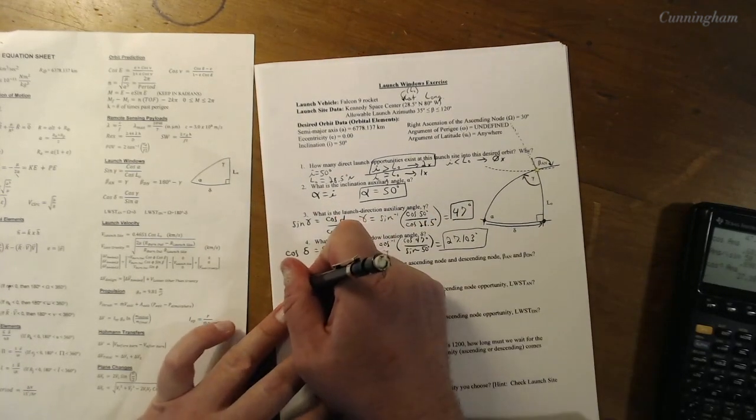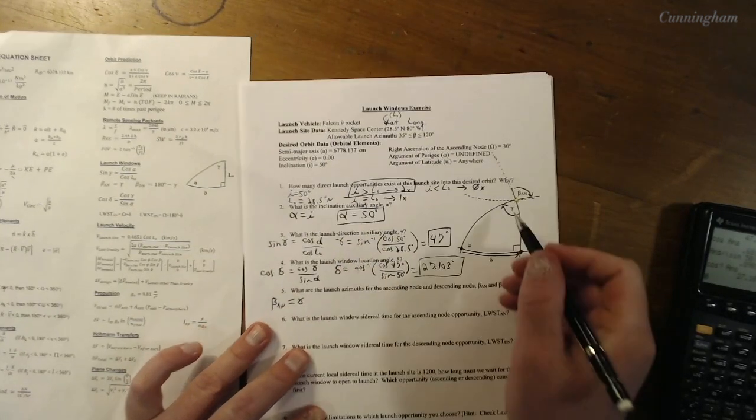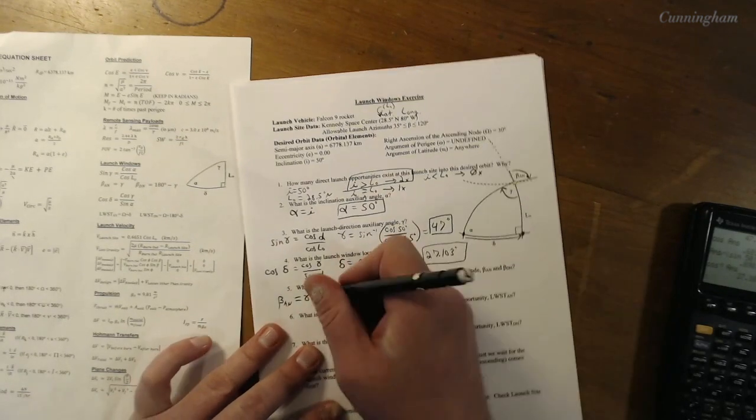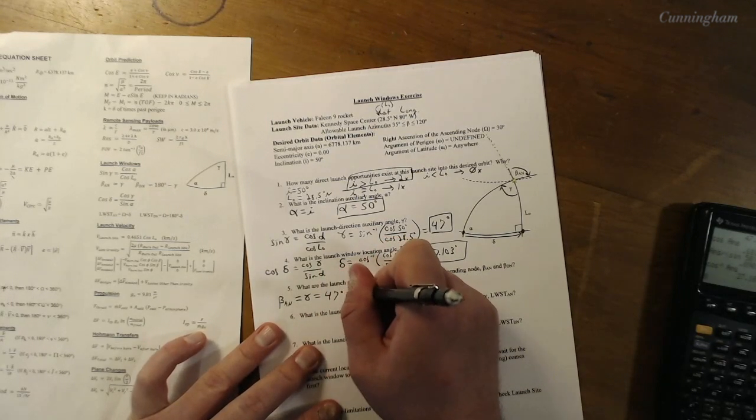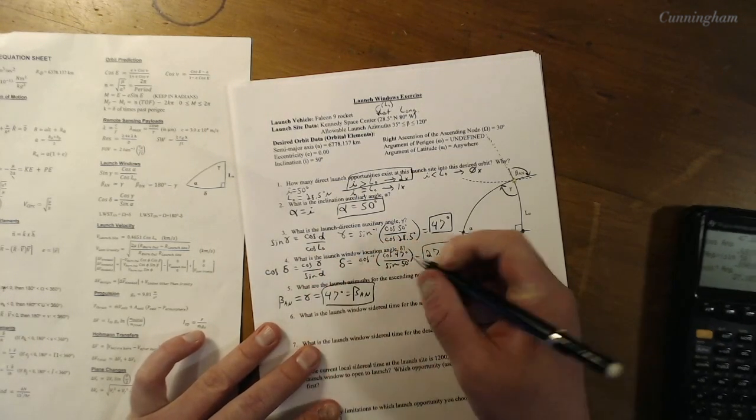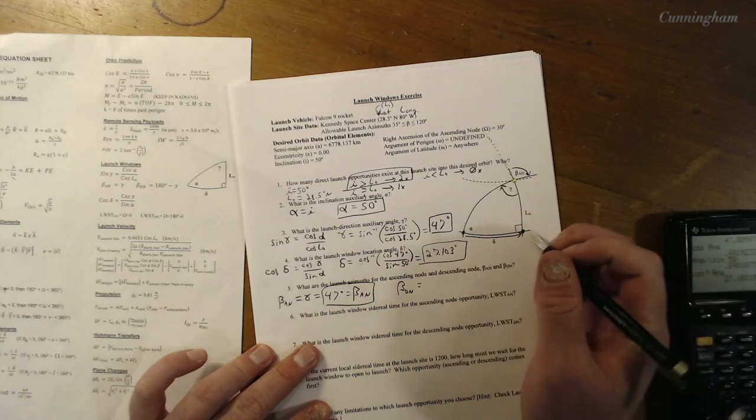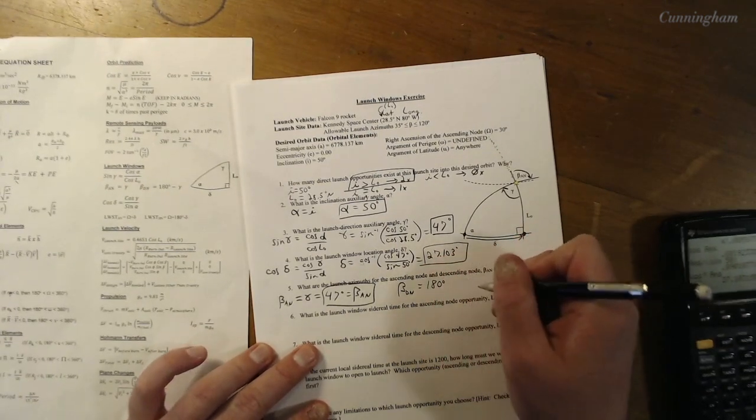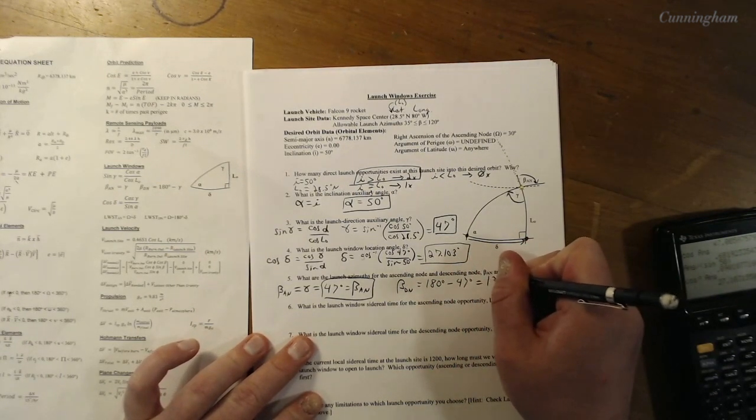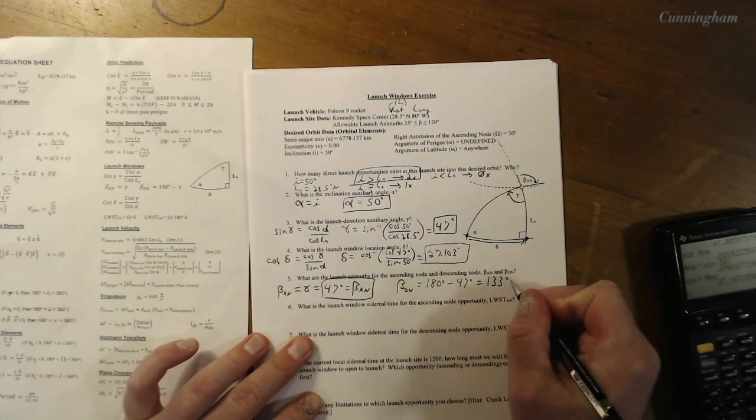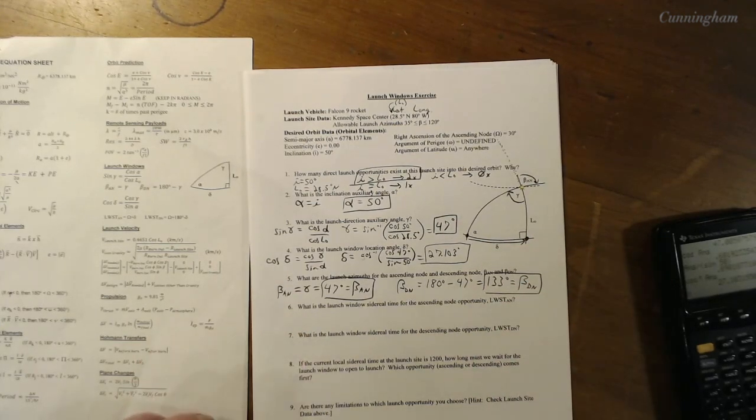The last kind of housekeeping piece of math that we're going to do is finding out the launch azimuth, or beta, for the ascending node and the descending node. Now this angle right here is beta. Whatever you find gamma to be, because of the triangle math, the ascending node opportunity is going to be the same angle. Launch azimuth of the ascending node, the equation sheet tells us, is literally the same as gamma. We proved that, those are equivalent angles. Of course we found mathematically that's 47 degrees. That's for the ascending node. Descending node is pretty straightforward too. We know that's 180 degrees away always from the ascending node opportunity. And the equation sheet helps us with that. That gives us 133 degrees. So those are our launch azimuths.